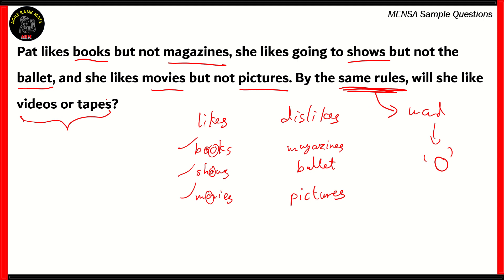So when it comes to videos and tapes, we can see that videos have the letter O in it. The word videos has the letter O in it. So therefore, according to the same rules, Pat is supposed to like videos. So the answer here is videos.